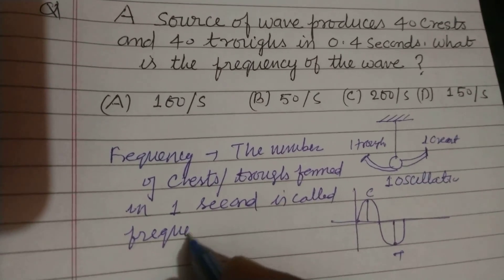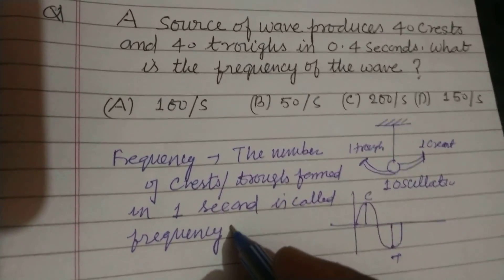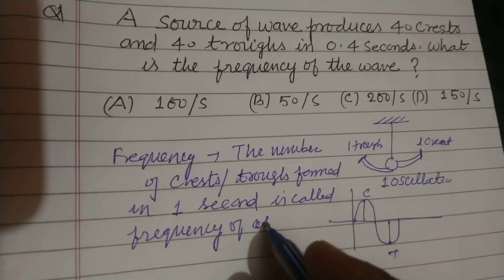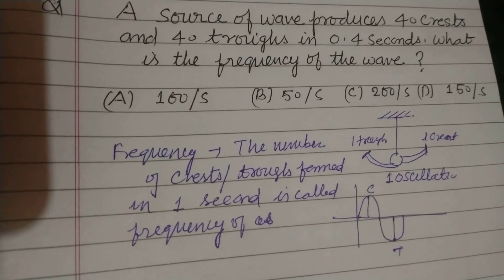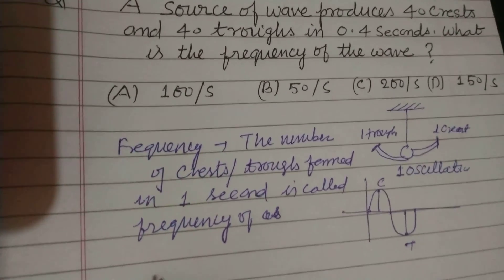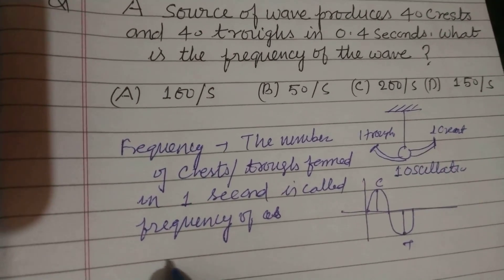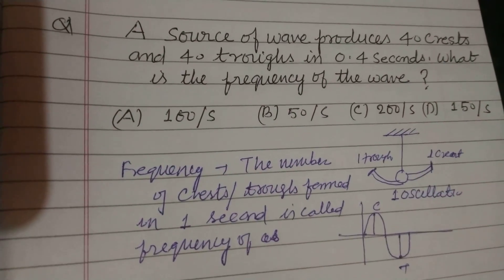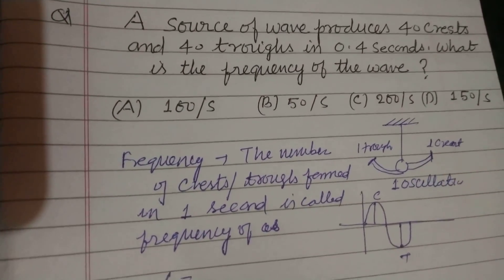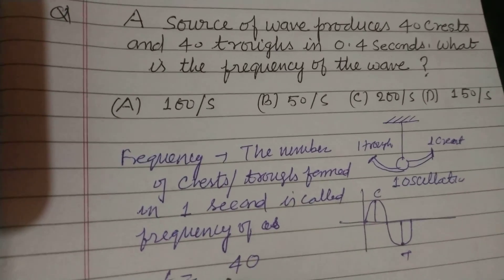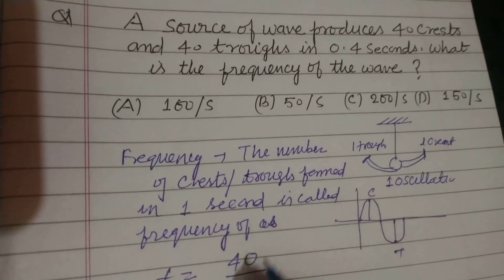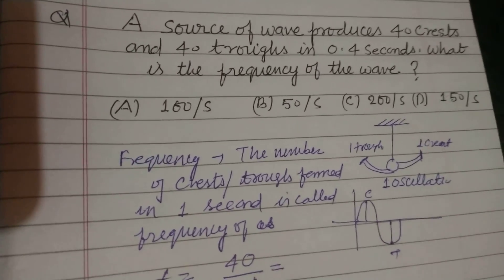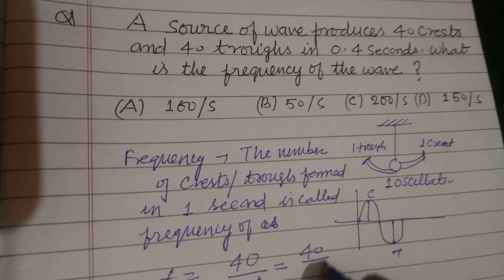So the number of crests formed here is 40. So frequency is equal to 40 over 0.4, and this 40 upon...